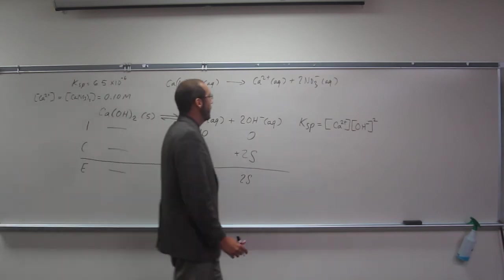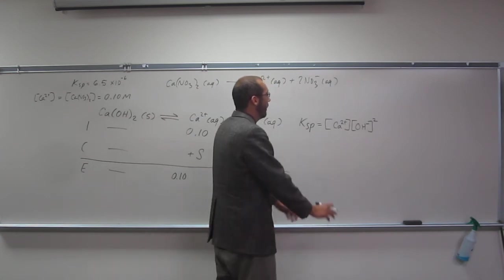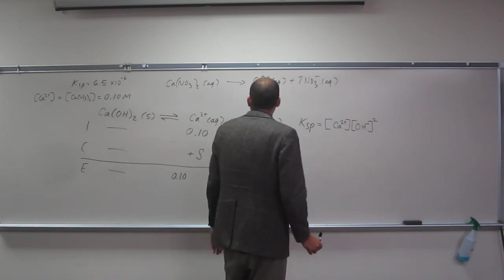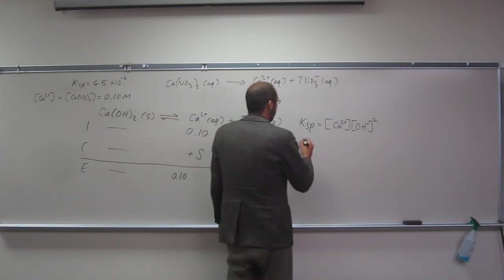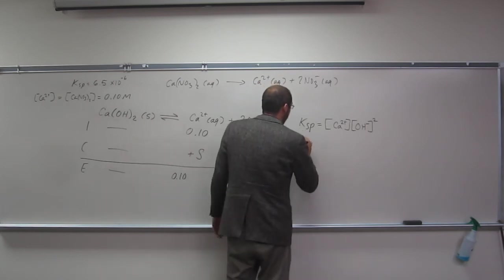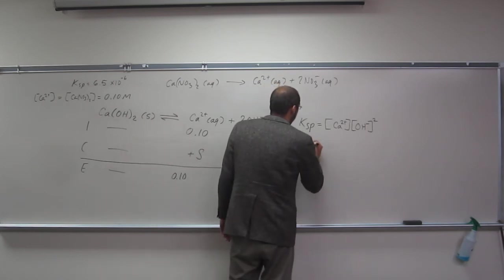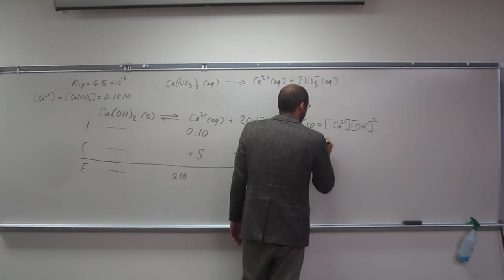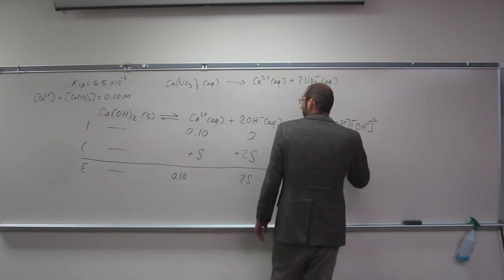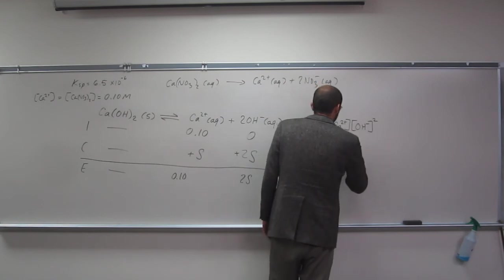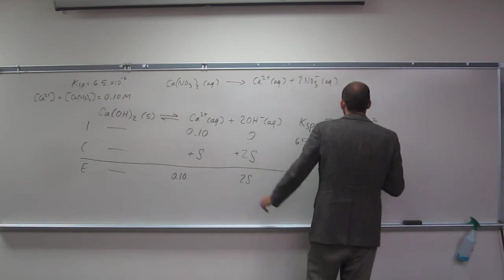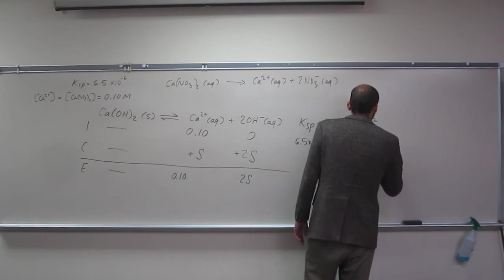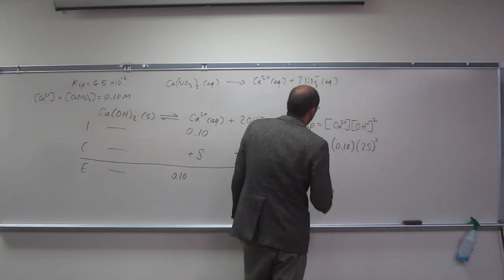So let's plug into our equilibrium constant expression and see what S is. So the Ksp is going to be the same, 6.5 times 10 to the negative 6 equals the calcium, 0.10, and the hydroxide is 2S squared.